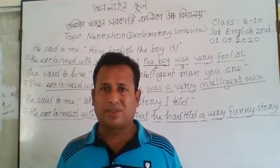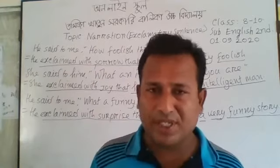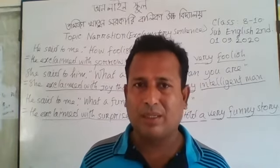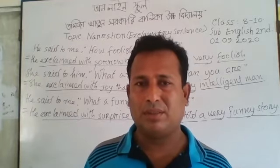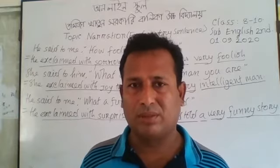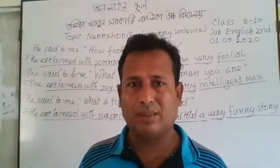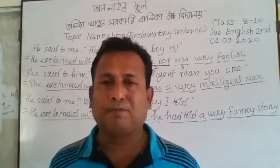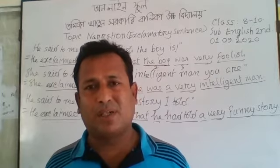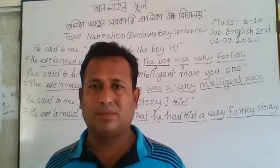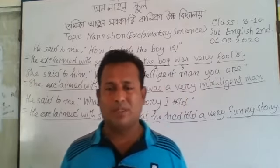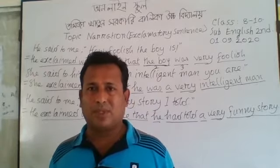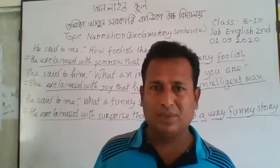Do you know what an optative sentence is? An optative sentence is that type of sentence by which a wish, a prayer, a desire, or a longing is made for someone, a group of people, or any other subject. It is the optative sentence as it is a matter of wishing or praying, so it is not very hard for you to change it. The reporting of all types of sentences is very important.